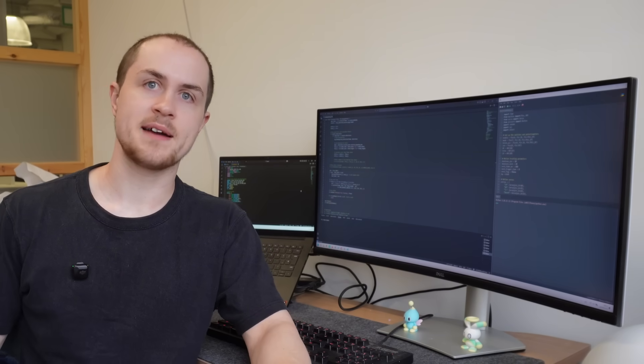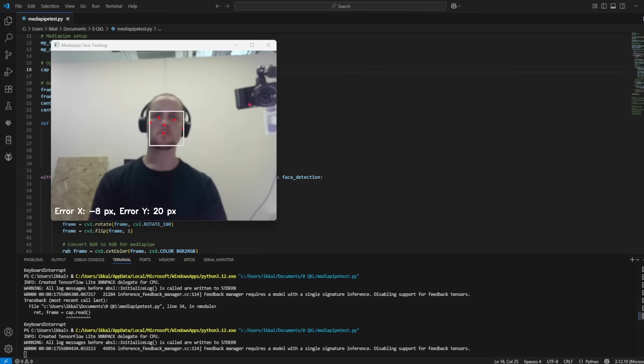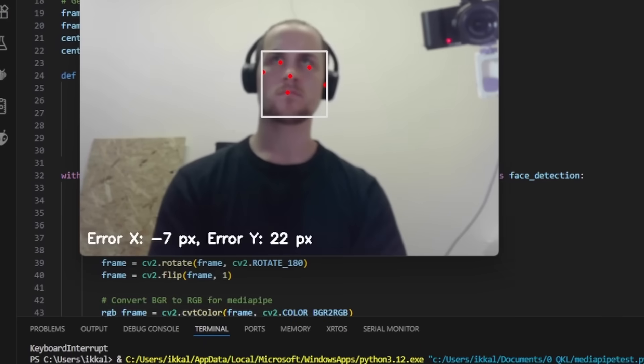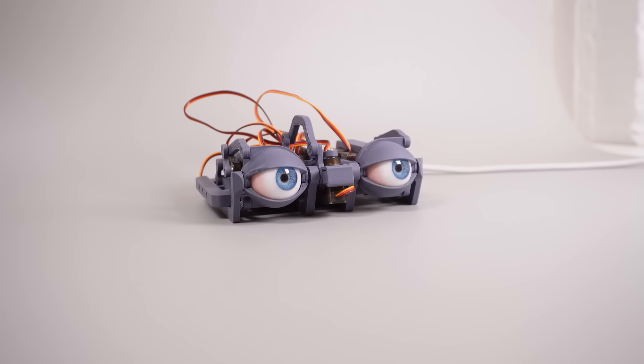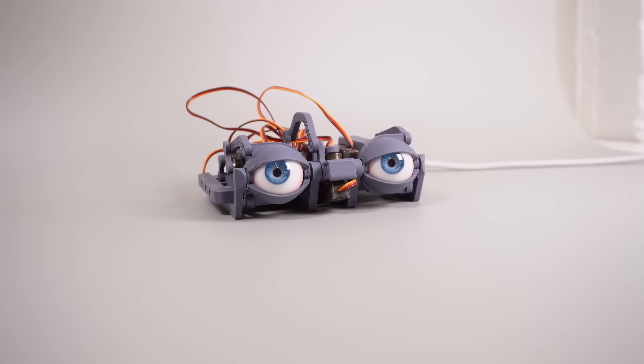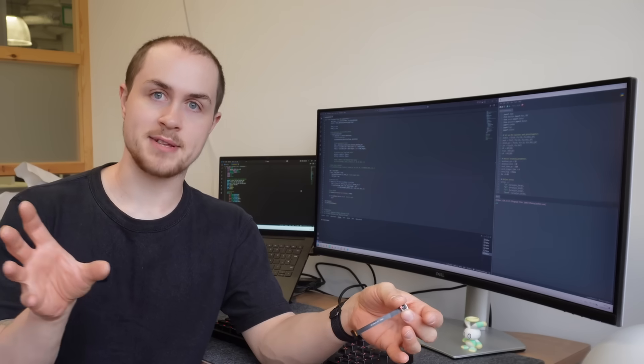My strategy was to take the live feed from the camera, calculate the X and Y offset between my face and the center of the screen, and output this error to the eye mechanism's control board, which would then move the eyes to try and get the error down to zero. There were three distinct phases of fighting with the code to get this working.